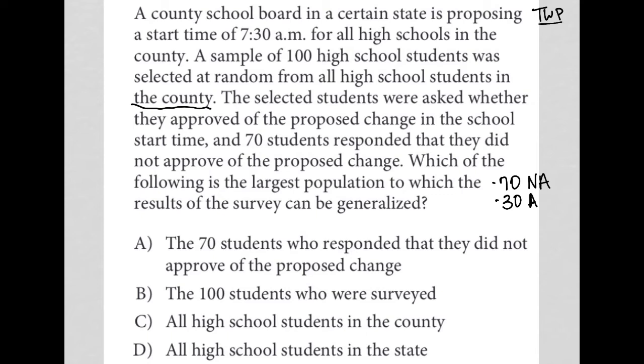Choice A: the 70 students who responded that they did not approve of the proposed change. That doesn't make any sense — that is not a population to which the results can be generalized. We know what they said; there's no generalization necessary. Choice B: the 100 students who were surveyed. Again, we know that out of the 100 students surveyed, 70 did not approve and 30 did approve, so there's no need for a generalization.